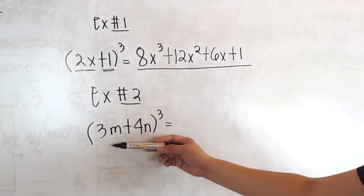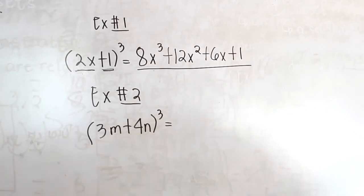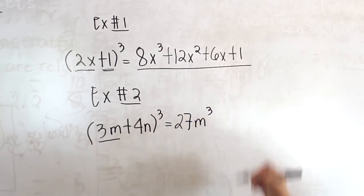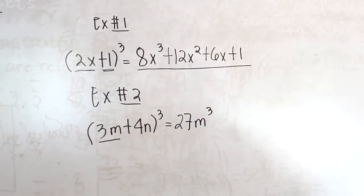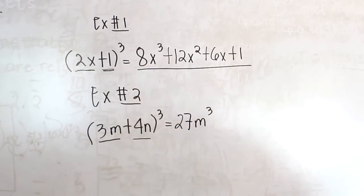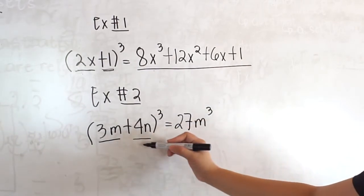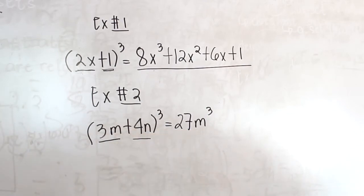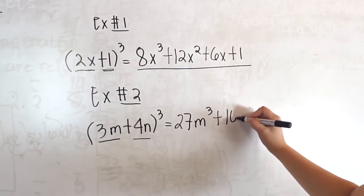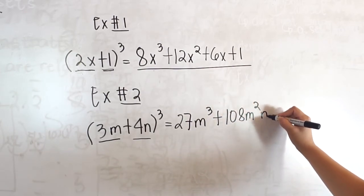The second example is (3m + 4n) cubed. First, cube the first term: 3m cubed is 27m cubed. Next, square the first term times the second term times 3. So 3m squared is 9m squared, times 4n is 36m squared n, times 3 is equal to 108m squared n.